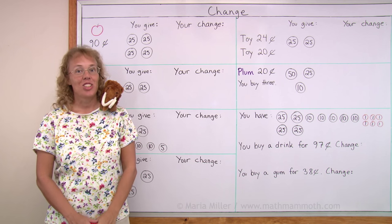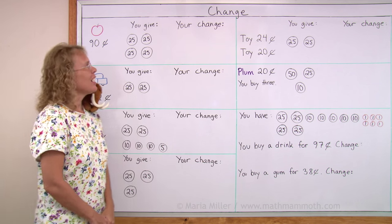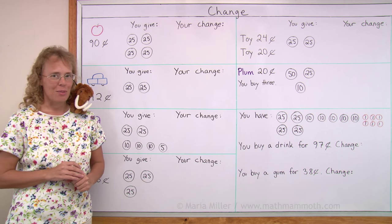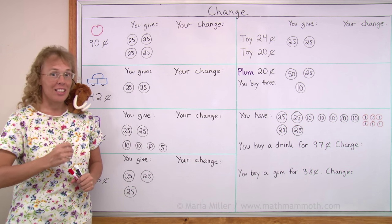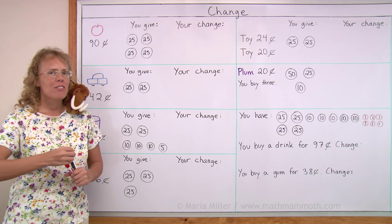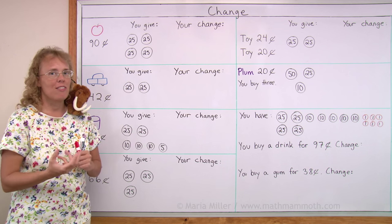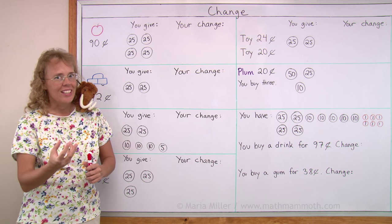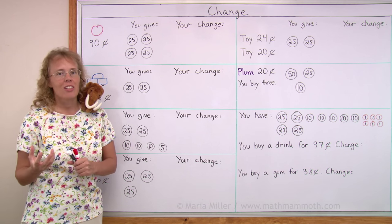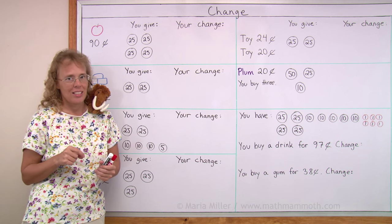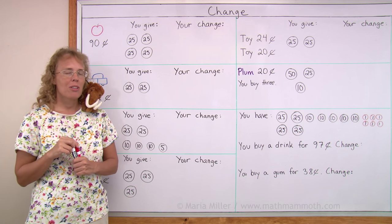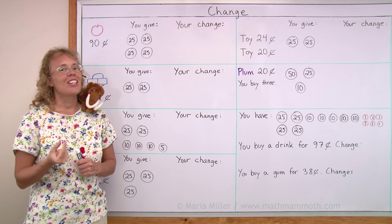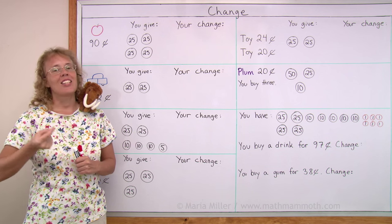In this lesson we're going to study change. What is change? It is when you go shopping and you buy something and you give money for that item you're buying, but you give too much. That is because you don't have the exact amount, so you give a little bit too much, and then the shopkeeper or clerk will give you back some money. That's your change — the difference between the price and the amount you give.